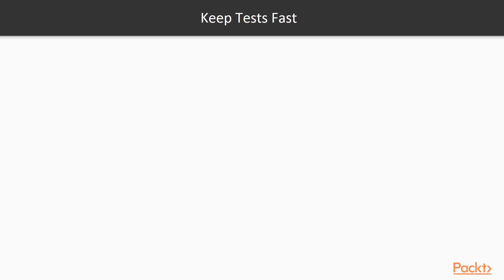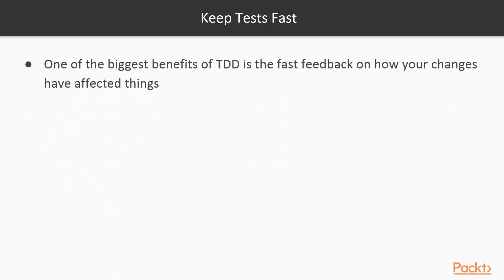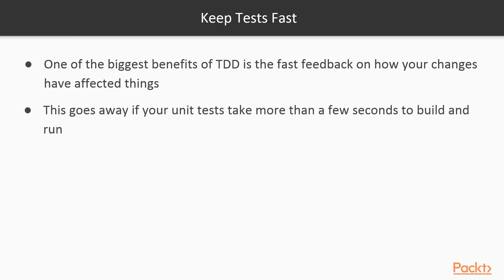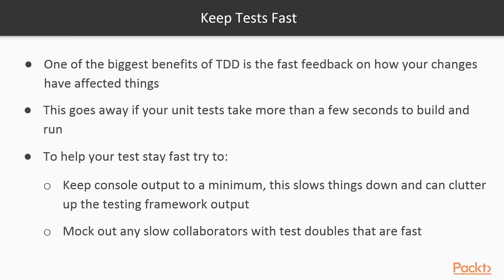Keep your unit tests building and running fast. One of the biggest benefits of TDD is the fast feedback on how your changes have affected things. You lose this if the build or execution of your unit tests is taking a long time, i.e. more than a few seconds. To help your tests stay fast, try to keep console output to a minimum or eliminate it altogether, as this output just slows down the test and clutters up the test results. Mock out any slow collaborators with test doubles that are fast, such as network connections and databases.